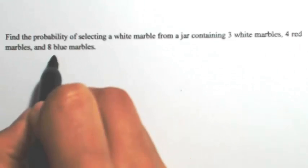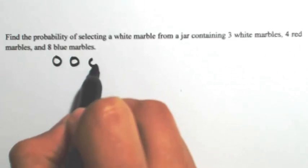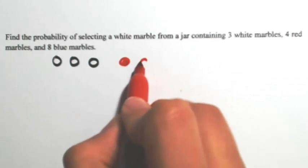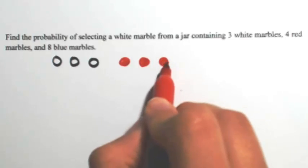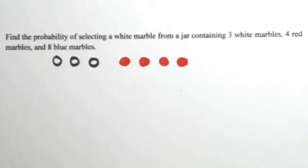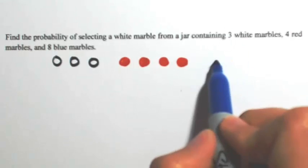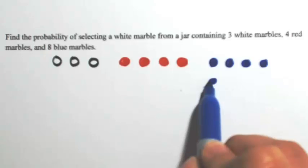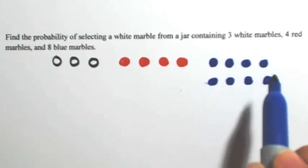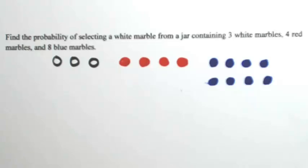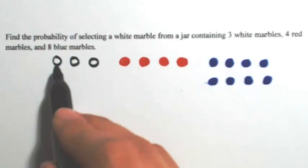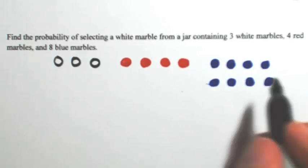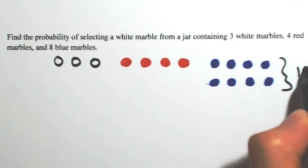Let's draw it out. We have three white marbles, four red marbles, and eight blue marbles. Altogether, we have one, two, three, four, five, six, seven... fifteen marbles. So altogether, there's fifteen marbles.